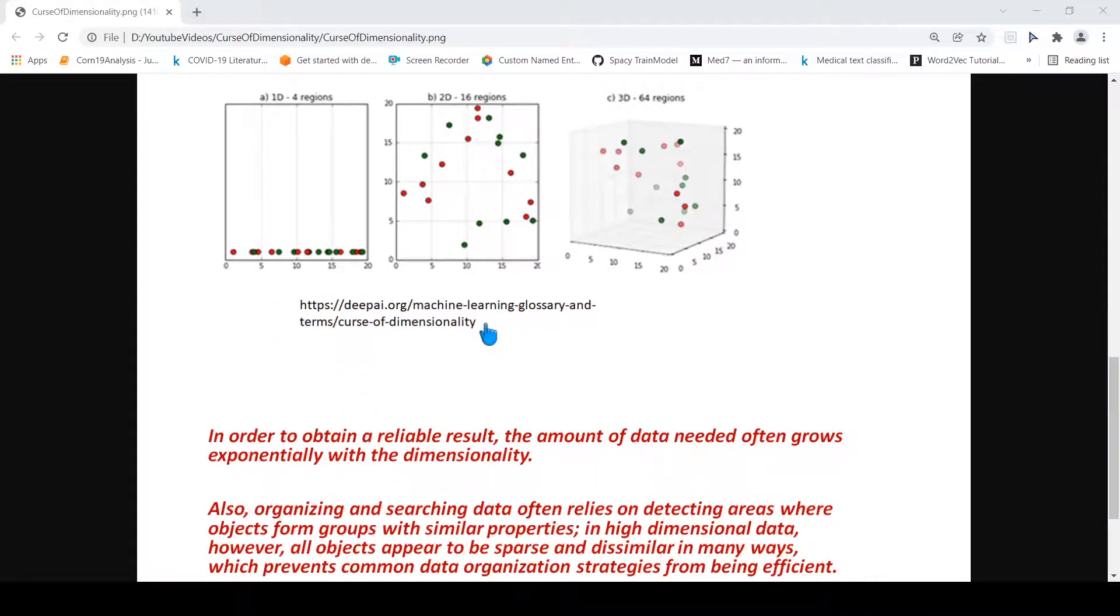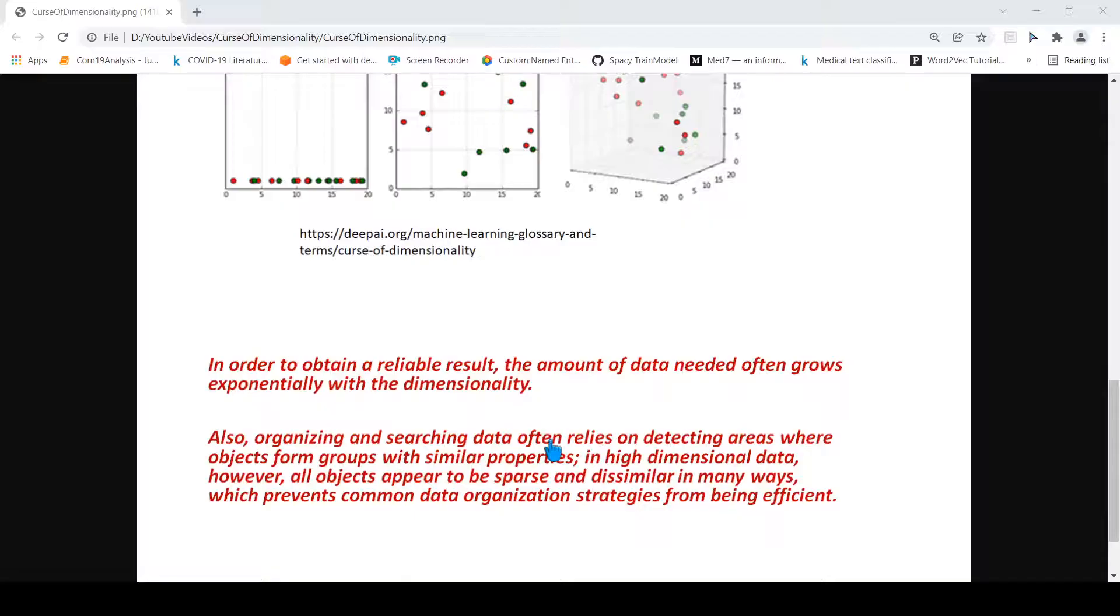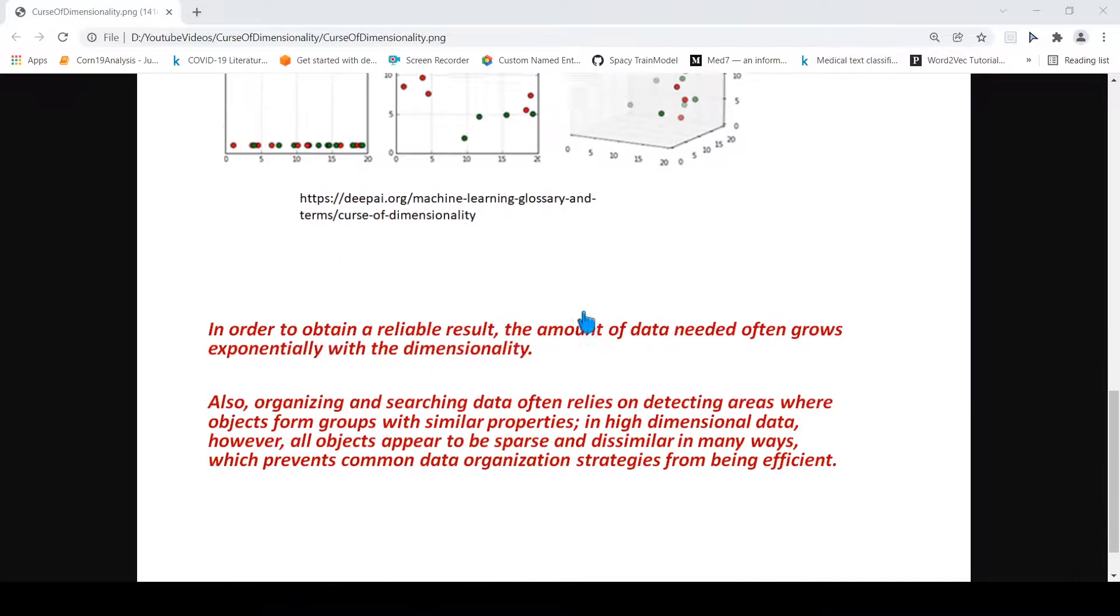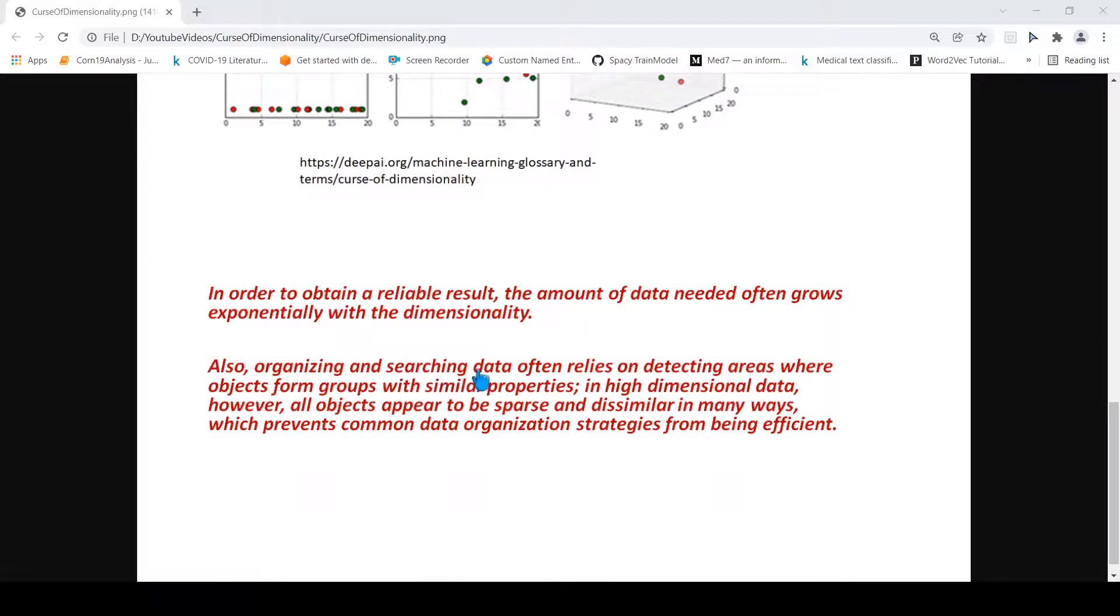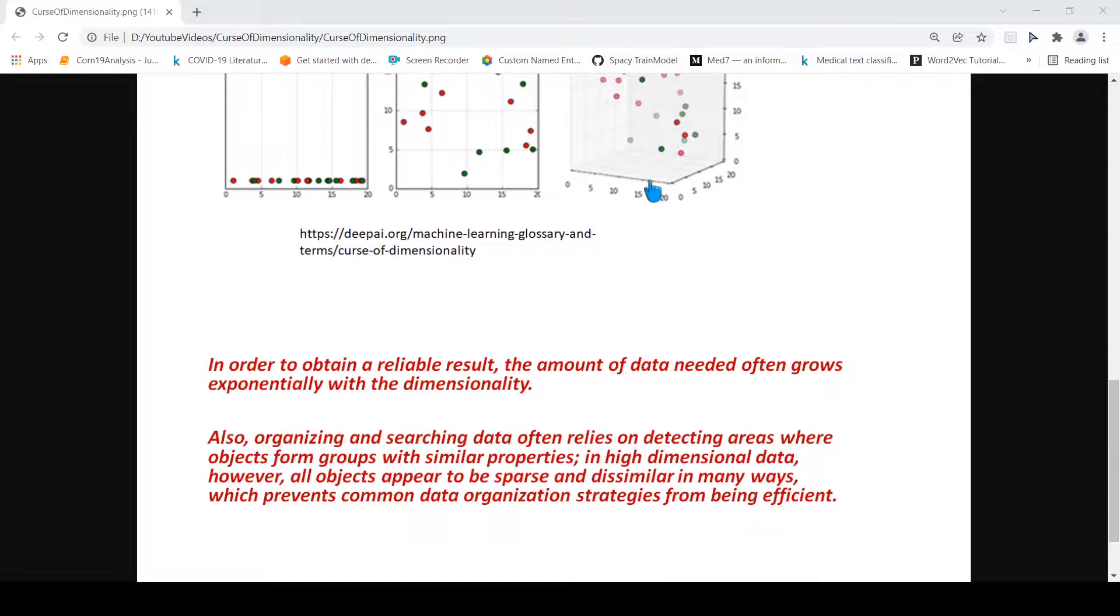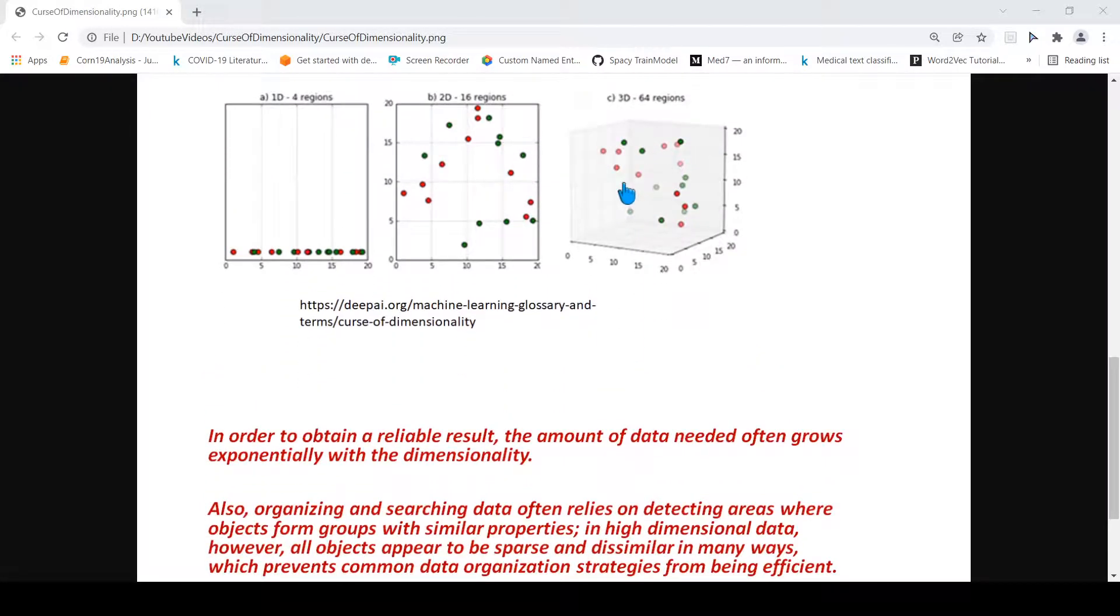What happens is that when the data is spread in a sparse manner, when we are trying to do any machine learning algorithm we look for similarity in data. Organizing and searching data often relies on detecting areas where objects form groups with similar properties. In high dimension, all these objects will appear to be sparse and hence dissimilar in many ways. Because of this sparse spread it will be dissimilar, and because it is sparsely spread, you need more data samples if you want your algorithm to actually find similarity.